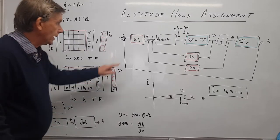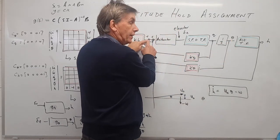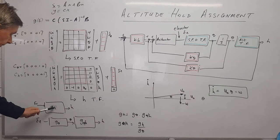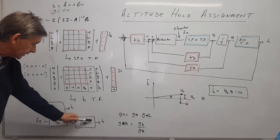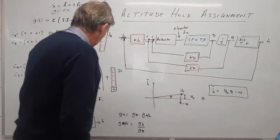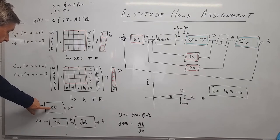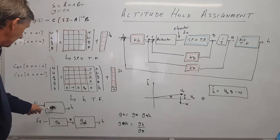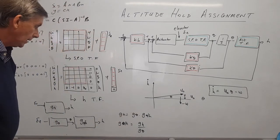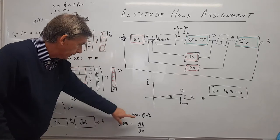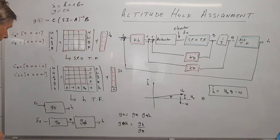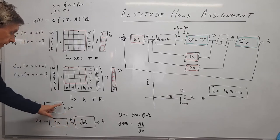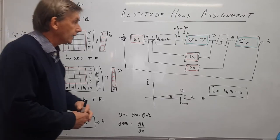We've got a transfer function between elevator and h, and another between elevator and theta. We know that g_h equals g_theta times g_theta_h. So if we work out the two transfer functions g_h and g_theta and divide one into the other, we get the altitude-to-theta transfer function. We'll do that calculation in MATLAB, and that gives us this transfer function.